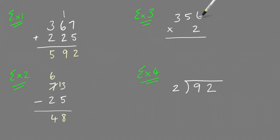356 times 2. 6 times 2 is 12. Put down the 2, carry the 1. 5 times 2 is 10, plus 1 is 11. Put down the 1 and carry the 1. 3 times 2 is 6, plus 1 is 7. And that's how you do those ones.